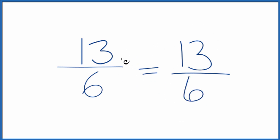What that means is that 13 over 6, this is already in lowest terms. We can't reduce this any further.